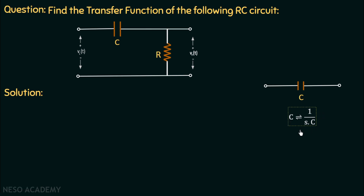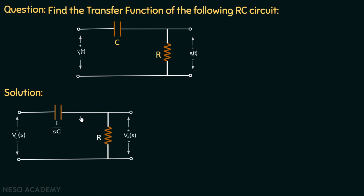We will continue with our solution. The Laplace equivalent circuit has the capacitor represented as 1 over sC, the resistor as R, the input vi(t) as Vi(s), and the output vout(t) as Vout(s). We need to find the transfer function, which is the ratio of the Laplace transform of output to input, by first finding the output voltage measured across the resistor.